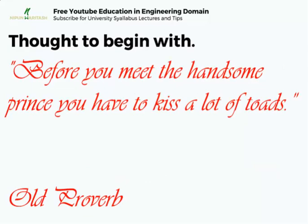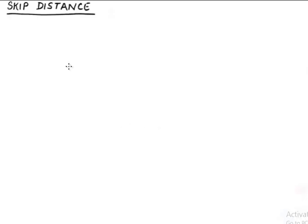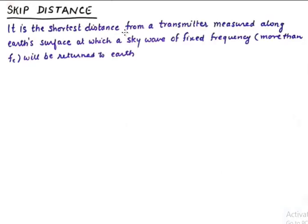Let's look at the definition of skip distance. It is the shortest distance from a transmitter measured along earth's surface at which a sky wave of fixed frequency more than FC will be returned to earth.